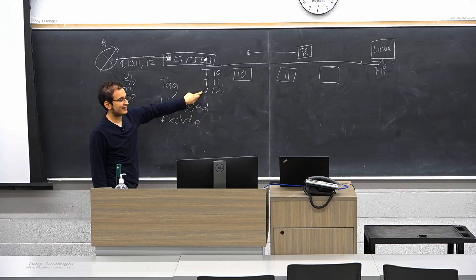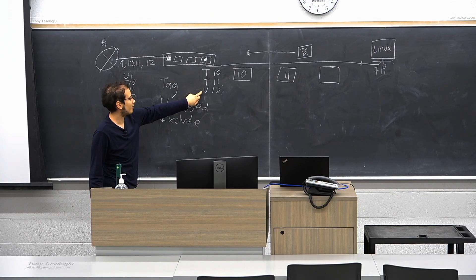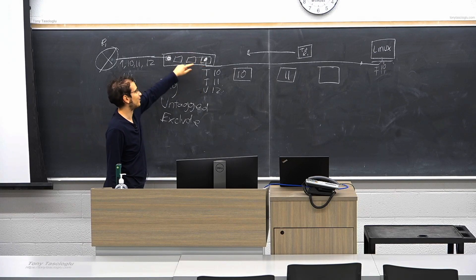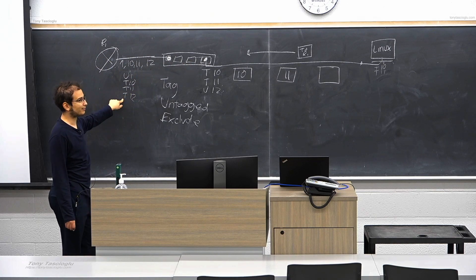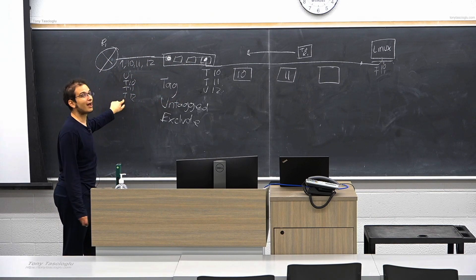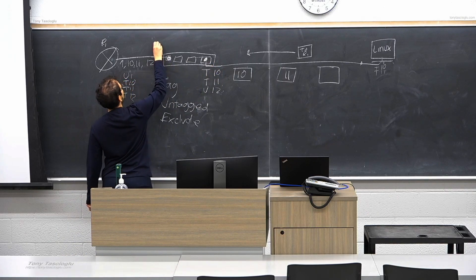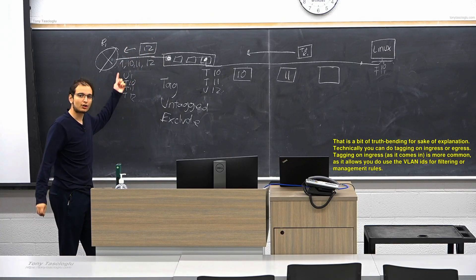So now, what this means is that whenever something's going to VLAN 12, this computer doesn't tag it. So I plug the computer in normally, the computer will send it over here. The switch receives this untagged packet and says, this one doesn't have a VLAN ID. Check the list - this computer says untag 12. That means packets without a tag belong to VLAN 12. This is going to router 1.